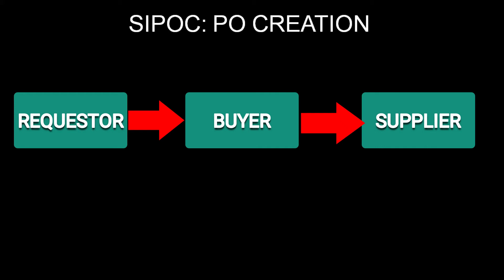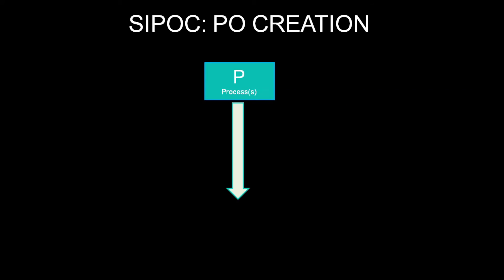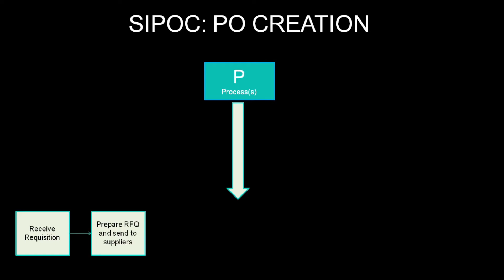Now let's see how I used SIPOC to map this process. The process starts when the buyer receives the requisition. The buyer prepares the request for quotation and sends it to the suppliers. Once the suppliers respond, the buyer reviews the quotations and selects the right supplier.